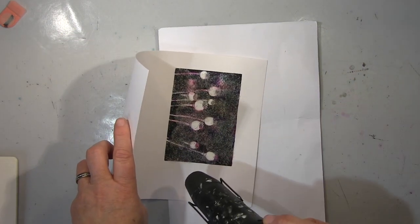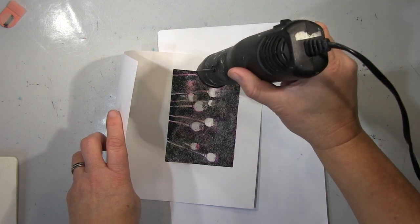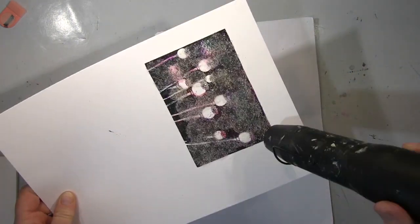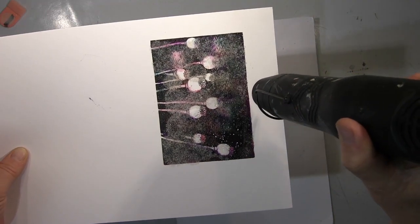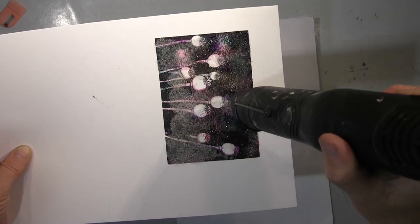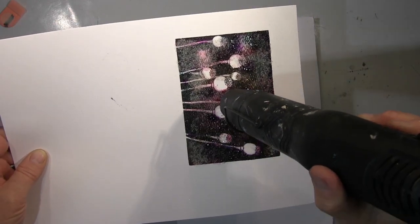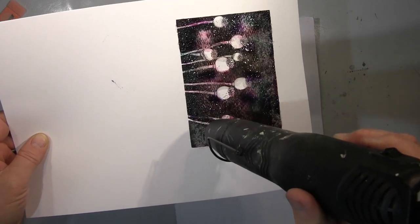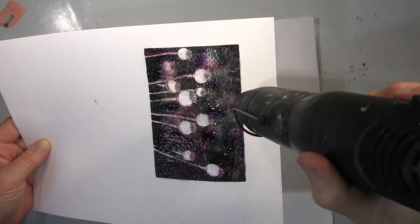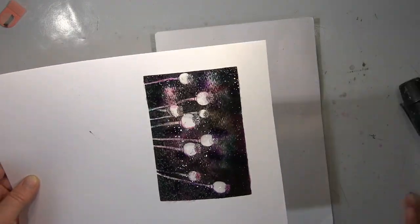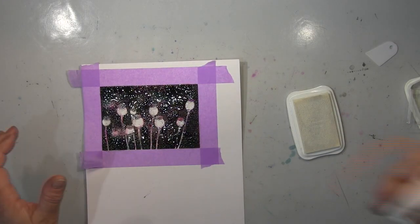Um noch eine dicke Schicht drauf zu kriegen, um dann eben diesen falschen Resin- oder Epoxy-Harz-Effekt zu bekommen. Natürlich bekomme ich so keine sehr glatte Oberfläche. Die wollte ich auch nicht. Ich wollte es schon texturiert, also die Textur wollte ich schon mehr haben. Und ich glaube, das ist jetzt die letzte Schicht, die ich mache.